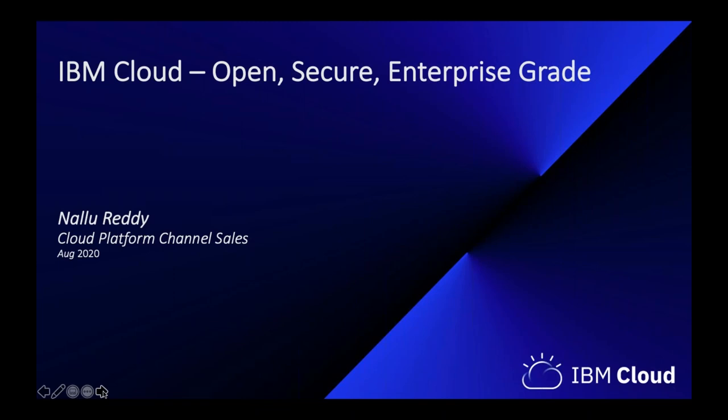Hi everyone, and welcome to today's webinar, Arrow Unite with IBM Public Cloud. Before we get started, I'd like to go over a few items so you know how to participate. You should see a box in the upper right corner of your desktop — that is your control panel. You are listening using your computer speaker system by default. If you'd prefer to join by phone, select telephone in the audio tab and the dial-in information will be displayed. You may submit questions by typing into the question pane on your control panel at any time. Questions will be collected and addressed after the webinar through email.